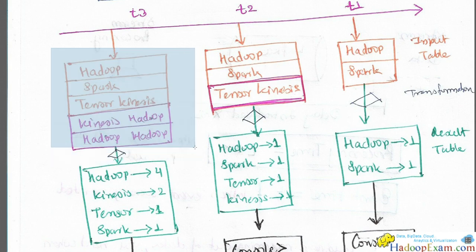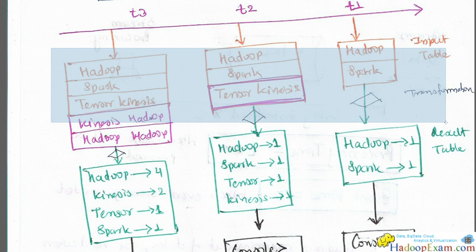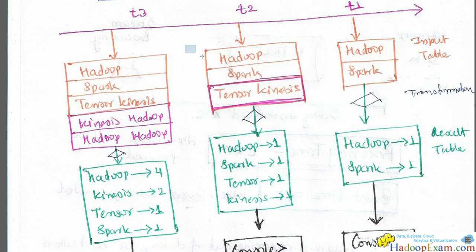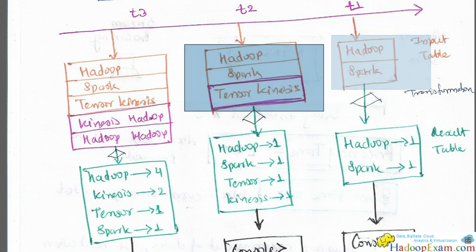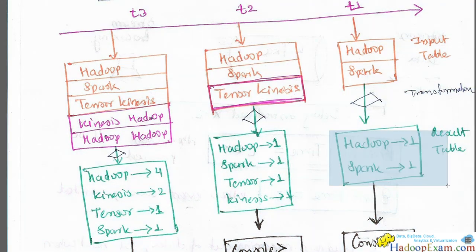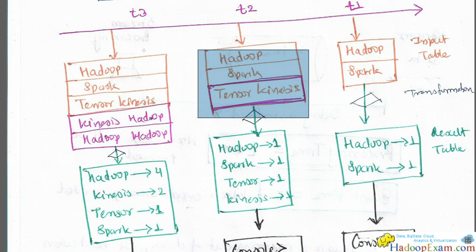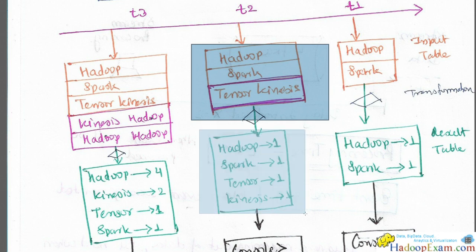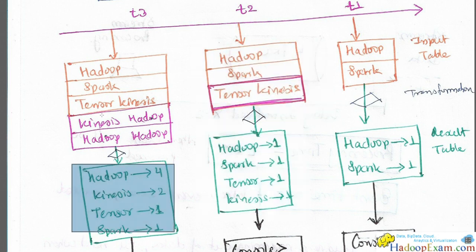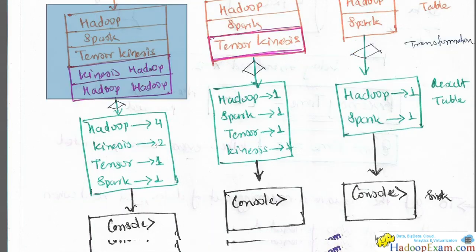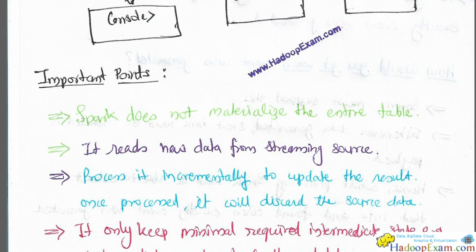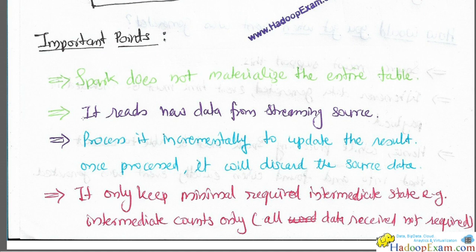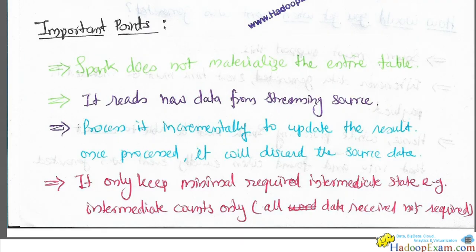An important point: Spark does not materialize the entire table. From the streaming source, data is continuously added. If it tries to materialize everything, it becomes unnecessary. Once I have done the word count, why do I need to keep the raw input? The result is already in the result table. Spark knows it doesn't need that data anymore. It reads new data from the streaming source, processes it incrementally to update the result, and once processed it will discard the source data. It only keeps the minimal required intermediate state — for example, intermediate counts. All raw data received is not required.